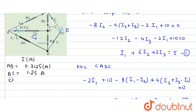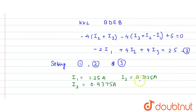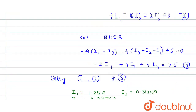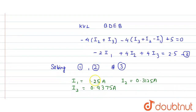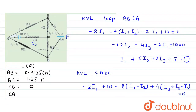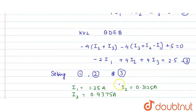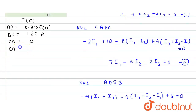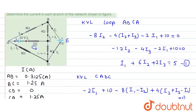In branch CD, the current is i2 + i3 - i1 = 1.25 - 1.25 = 0 A. In branch CA, the current equals i1 = 1.25 A.